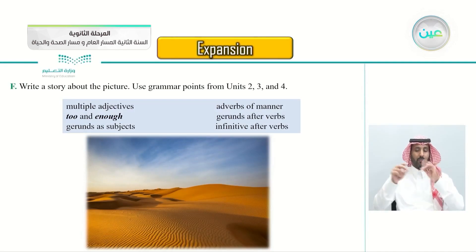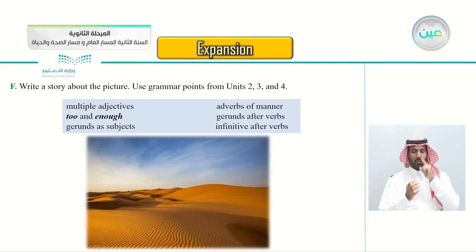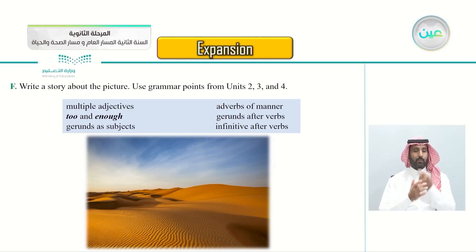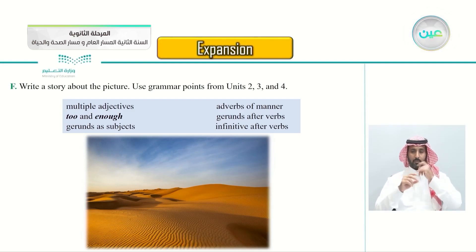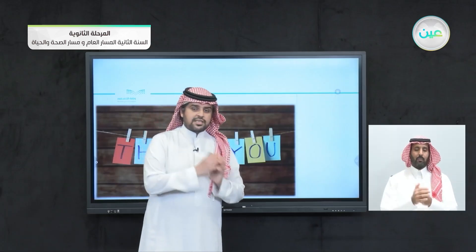Exercise F: write a story about the picture you see — a picture of the desert. Use the grammar points from units 2, 3, and 4: multiple adjectives, 'too' and 'enough', gerunds as subjects, adverbs of manner, gerunds after verbs, and infinitives after verbs. Write a story about this picture using the grammars from units 2, 3, and 4. With that we reach the end of this lesson — see you next lesson inshallah.